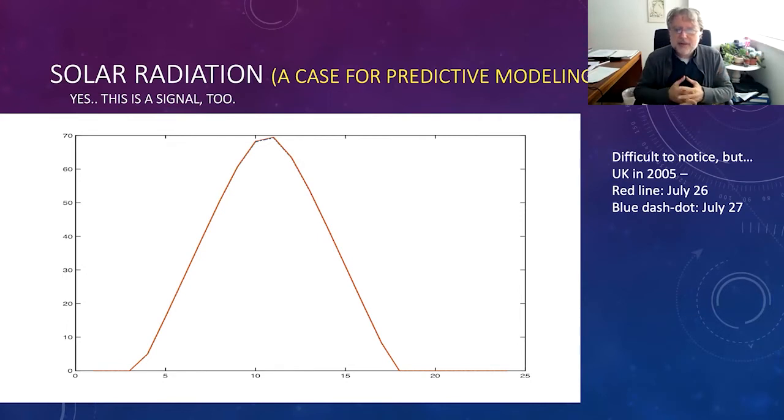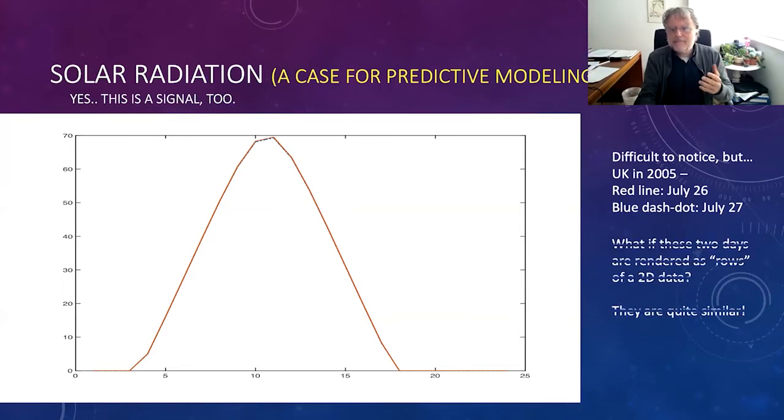This is an actual reading from United Kingdom in 2005. The red thing that you probably see right now on the screen is July 26th. And the blue dashed one is July 27th. And probably you cannot see that, the blue dashed dot one, because the red one and that blue dashed one are almost the same. So since they are the same, it's quite inefficient to represent them side by side in one dimension. Why are we not stacking them on top of one another to see something to make a better modeling, a predictive modeling, which is this case.